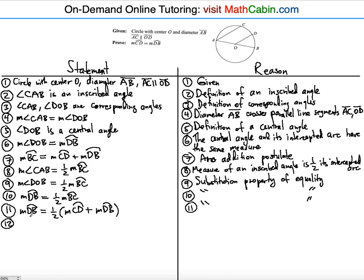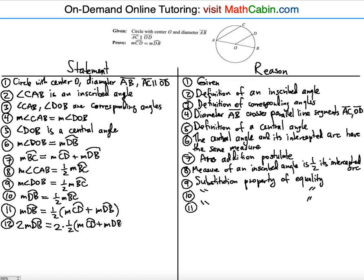Now multiply both sides by two. Twice the measure of arc DB equals two times one half times the quantity: measure of arc CD plus the measure of arc DB. The reason is the multiplication property of equality.